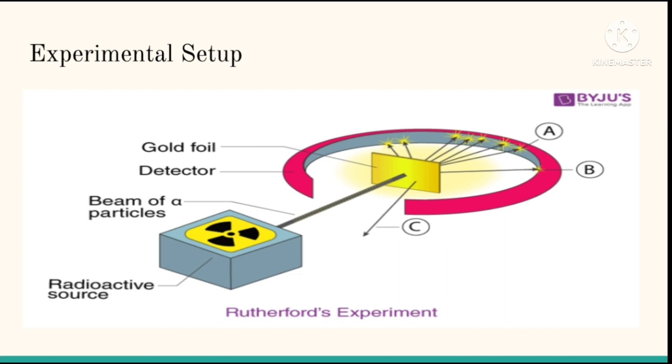So, this is the basic experimental setup by Rutherford and his associates. It consists of a source of alpha particles obtained from a radioactive substance and the narrow beam of alpha particles was made to fall on a thin gold foil which is of thickness 10 raised to power minus 8 meter.